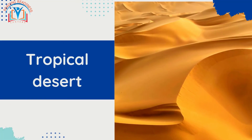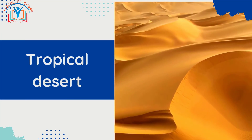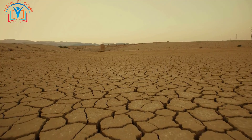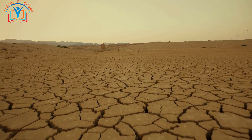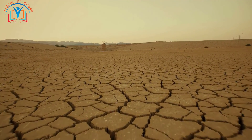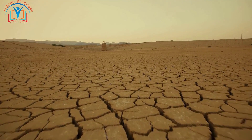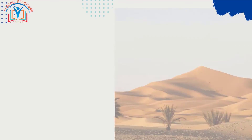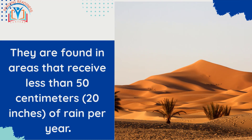Tropical deserts are characterized by their hot, dry climate and lack of vegetation. They are found in areas that receive less than 50 centimeters — 20 inches — of rain per year.